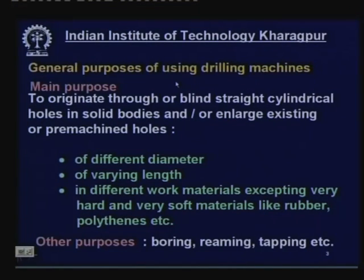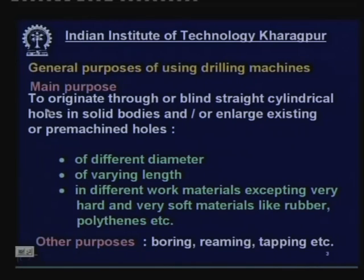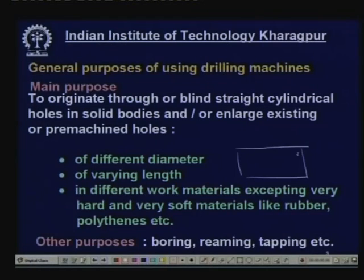Now let us start with the general purposes of using drilling machines. The main purpose of drilling machines is to originate through or blind straight cylindrical holes in solid bodies. To originate a hole means there is no hole at all in a solid body — for example, here is a solid plate and we want to make a hole.